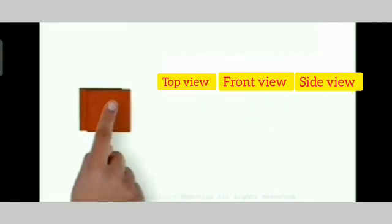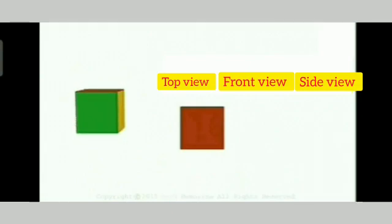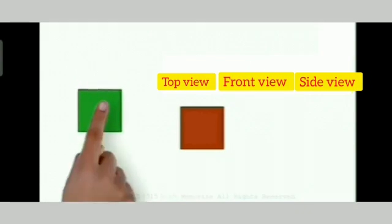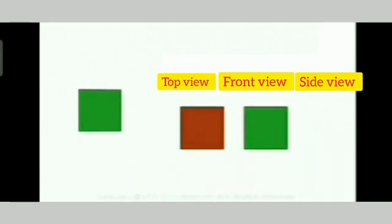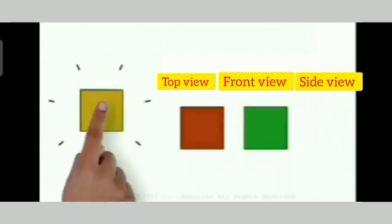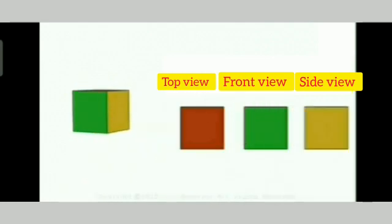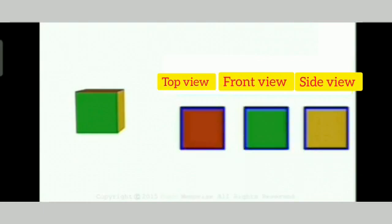Now, let's view the front surface which is green in color. It is also square in shape. So, from all the angles, from top view, front view and side view, a cube appears to be like a square.